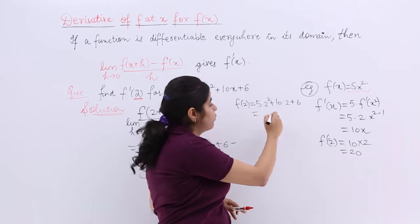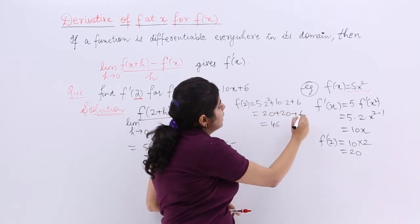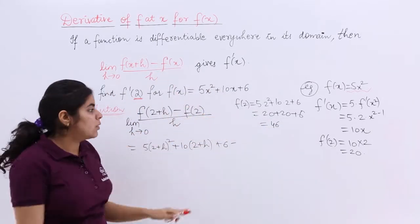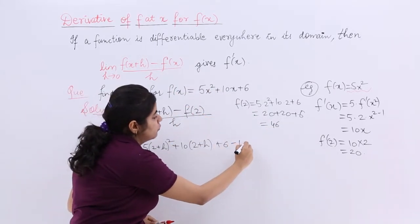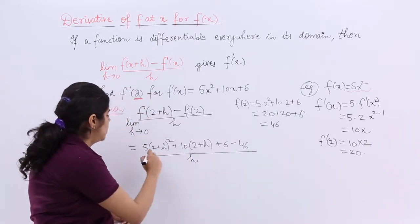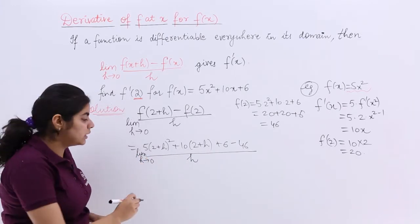2 square is 4. 5 times 4 is 20 plus 20 plus 6. 46. This is the answer, f of 2. Put here f of 2 is 46 upon h, limit h tends to 0. I do not think there is a problem with it.